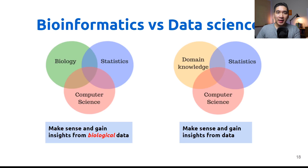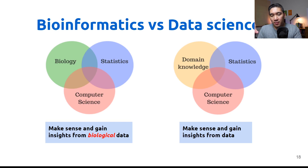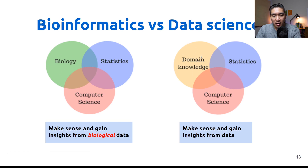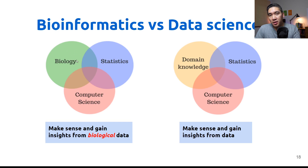Let's compare between bioinformatics and data science. Bioinformatics is aimed at making sense and getting insights from biological data, while data science is a more generic term meaning to make sense and gain insights from data. Bioinformatics and data science are quite similar — biology replaces domain knowledge, and statistics and computer science are essentially the same. The domain knowledge in bioinformatics is essentially biology. This is a crude comparison, as bioinformatics may not entail only machine learning algorithms.